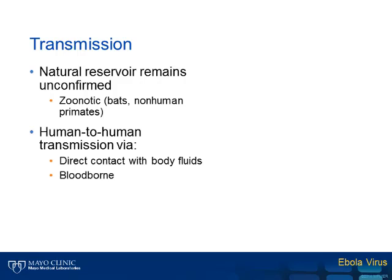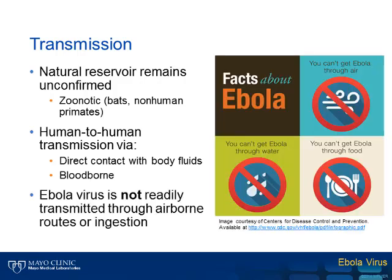Human-to-human transmission occurs by two primary routes: either direct or close contact with body fluids from an infected individual, or through blood-borne means — for example, through direct inoculation with a contaminated needle. It is equally important to understand by what routes the virus is not spread. Ebola virus is not considered a respiratory virus and is therefore not spread through airborne routes, and individuals are not infected through ingestion of the virus from either water or food.